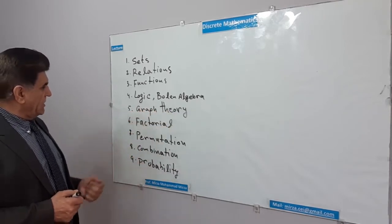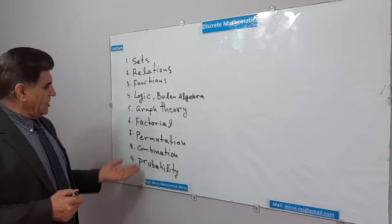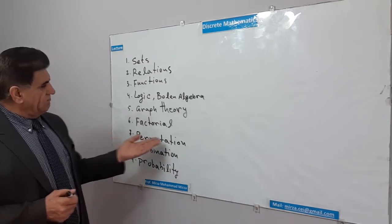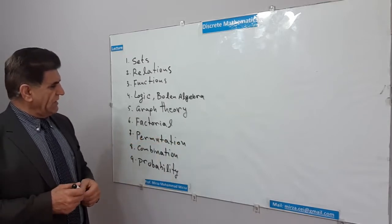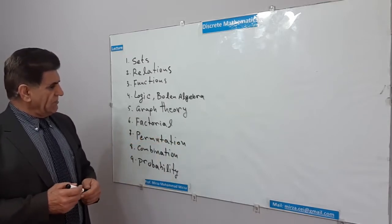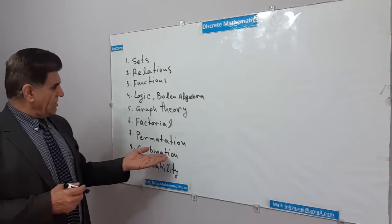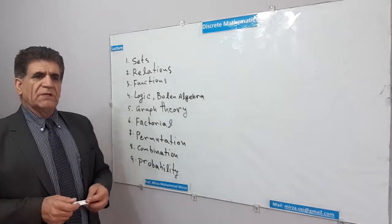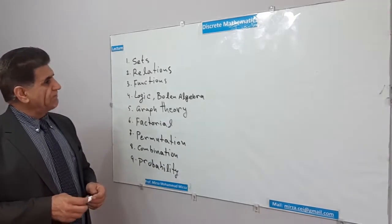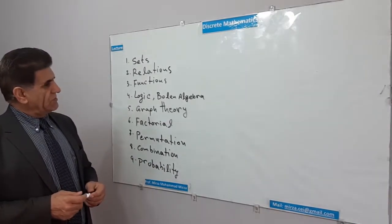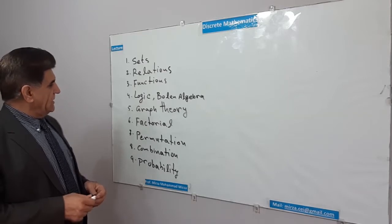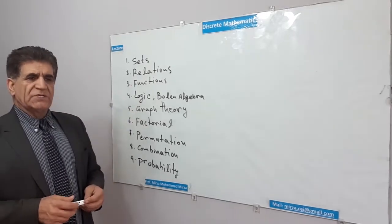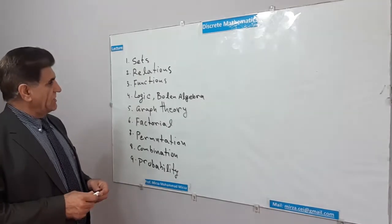We need to cover factors, permutations, combinations, and probability. Permutations and combinations are related, and probability is also in the same area. We want to be able to cover a large amount of information and record the content.